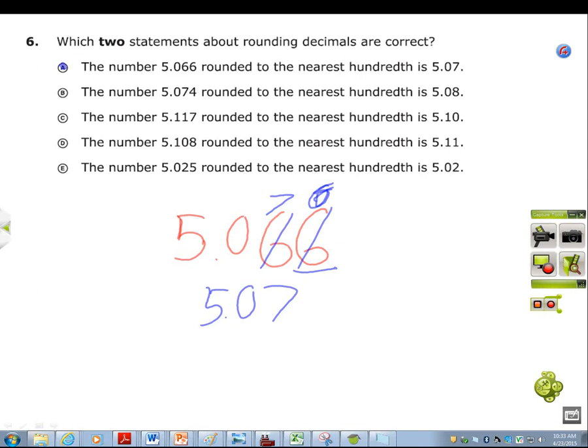Option B is the number 5.074 rounded to the nearest hundredth is 5.08. Now you know this is not true because four is not above five, so this is not true.